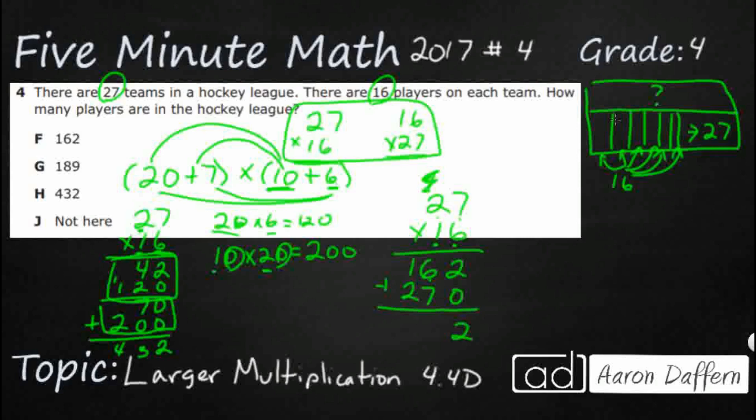And then you simply add those up. And you're going to get the exact same answer, 432. Either one works. One is called a standard algorithm right here. And then one is called partial products right here. They both get the same answer of H, 432.